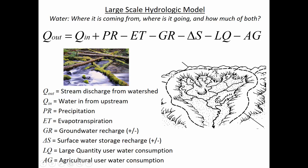Groundwater recharge — we usually think of it as going down into the ground and leading towards base flow, which gets into the streams. But there are cases where groundwater recharge could be a positive value in a watershed. For example, if there was infiltration on the right side of a ridgeline that then seeped into the watershed underneath the soil boundary, groundwater recharge could be positive. But in most cases, groundwater recharge decreases from the amount of precipitation that leads to runoff.